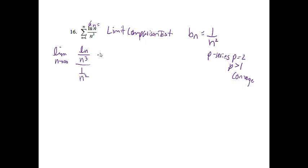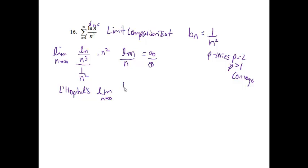I'll multiply by the reciprocal, so I end up getting ln(n) over n. If I try to plug infinity into both of those, I get infinity over infinity, which leads me to L'Hôpital's. So I'll still be finding the limit as n approaches infinity. The derivative of ln(n) would be 1 over n; the derivative of n is just 1.